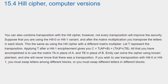You can also combine transposition with the Hill cipher. However, not every transposition will improve the security. Suppose that you are using the Hill 0 or Hill 1 variant and after the matrix multiplication you transpose the letters in each block. This is the same as using the Hill cipher with a different matrix multiplier. Let T represent the transposition. Applying T after a Hill 1 encipherment gives you C = T[AP + B] = [TA]P + [TB]. All that you have accomplished is to use the matrix TA in place of A and TB in place of B. Emily can solve the cipher using known plaintext and you will never know that there was a transposition.